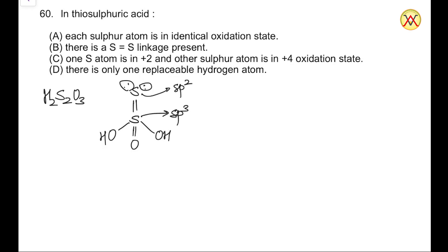Between the sp2-hybridized sulfur and sp3-hybridized sulfur, the sp2-hybridized sulfur is more electronegative because it has more percentage s-character. Since the central atom is attached to six bonds with more electronegative atoms, it will have a +6 oxidation state, and the sp2 sulfur, being more electronegative, will have an oxidation state of −2.